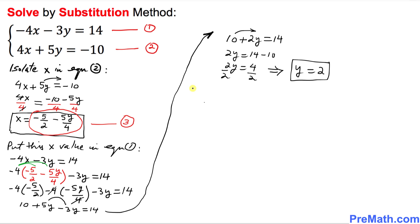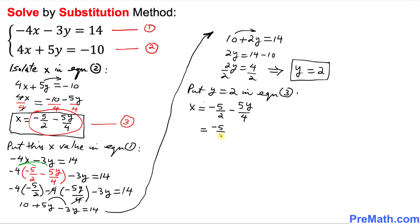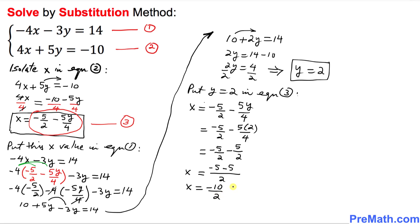Now we put y equals 2 into equation number three: x equals negative 5 over 2 minus 5 times 2 over 4. That gives us negative 5 over 2 minus 10 over 4, which reduces to negative 5 over 2 minus 5 over 2. So x equals negative 10 over 2, which means x equals negative 5.